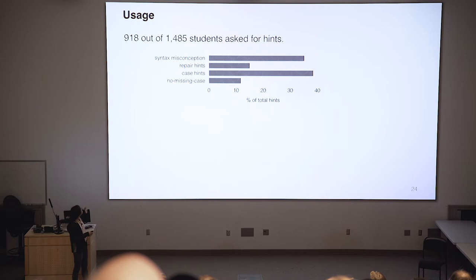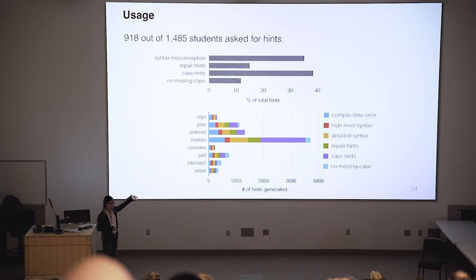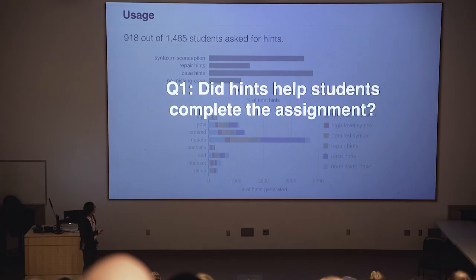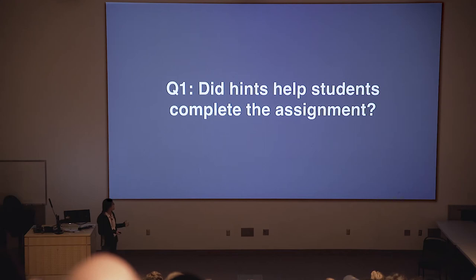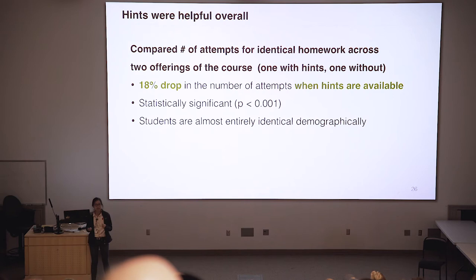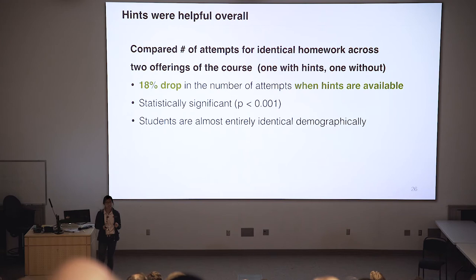It turns out that most students in the class actually asked for hints, and most of the hints generated were syntax misconception and missing-case hints. Here's the breakdown by question, ordered by appearance in the assignment. The most important question we want to answer is: does the hint system actually help students complete their assignments? We compared the number of attempts students took to solve a problem across two offerings — one with our hint system and one previously without it. It turns out there is about an 18% drop in the number of attempts students used to solve the problem, so our system seems to be pretty effective.